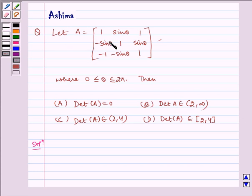Let A equal the matrix: [1, sin θ, 1; -sin θ, 1, sin θ; -1, -sin θ, 1].